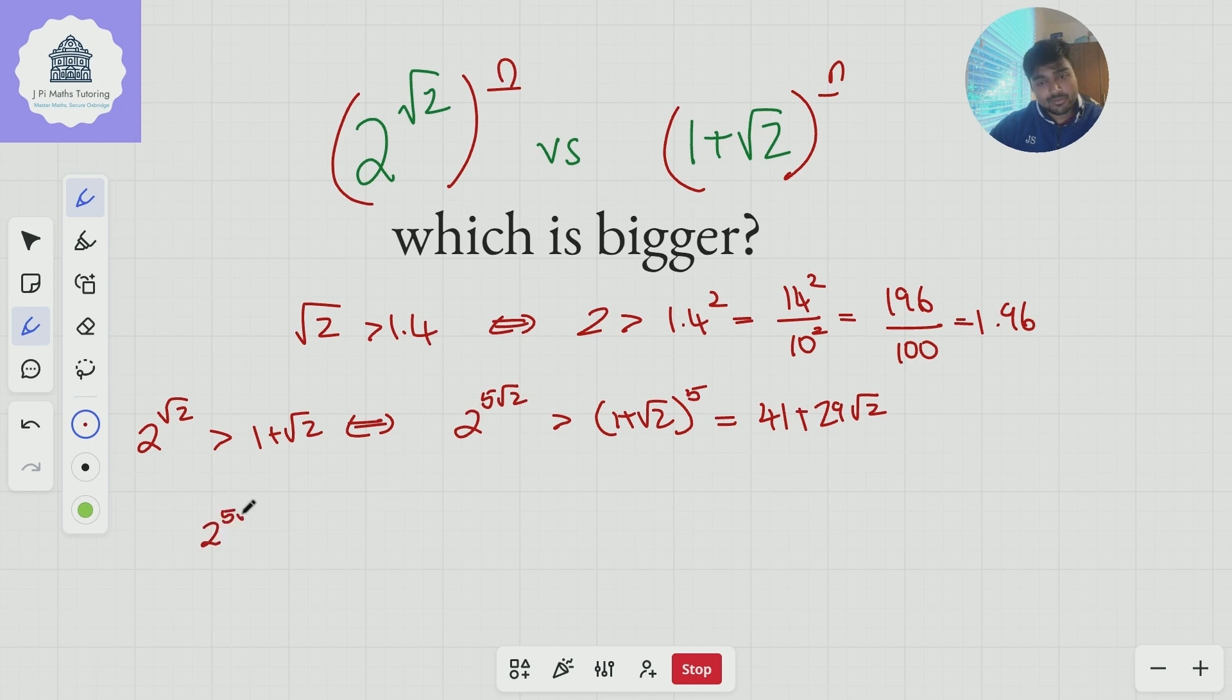Because 2 to the power of 5 root 2, because we know root 2 is bigger than 1.4, this must be bigger than 2 to the 9. And 2 to the 9 we can work out is just 512.